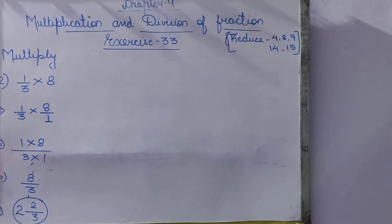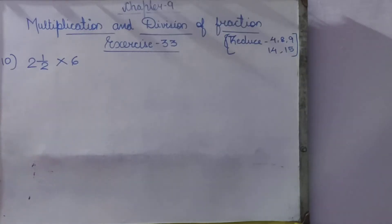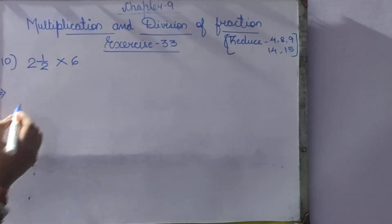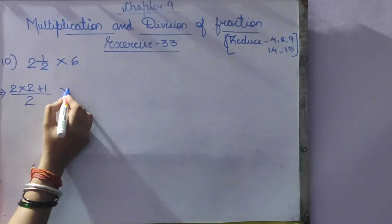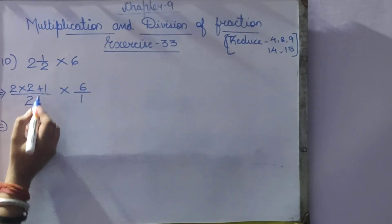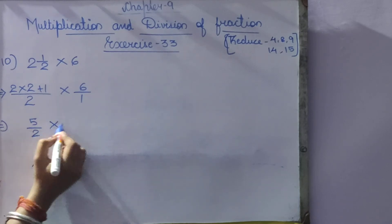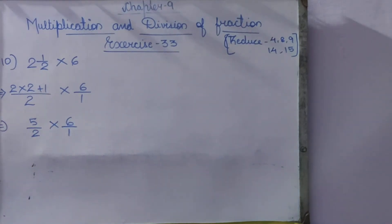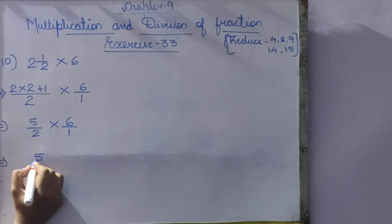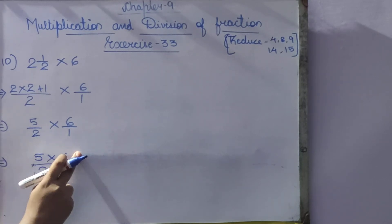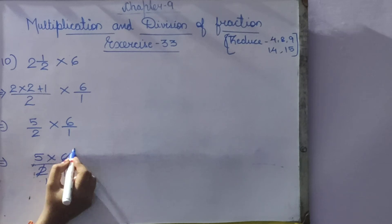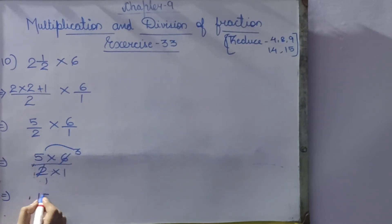Starting from question number 10: 2½ × 6. A mixed fraction is given, so first we convert it to an improper fraction: 2 × 2 + 1 = 5, giving 5/2. We multiply 5/2 × 6/1. We can simplify: 2 divides into 6 giving 3, so we get 5 × 3 = 15, and 1 × 1 = 1. Answer is 15.